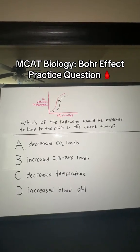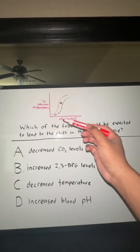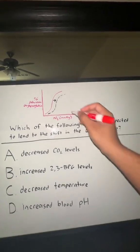Which of the following would be expected to lead to the shift in the curve above? This is an oxyhemoglobin saturation curve, and we're being asked about a right shift.